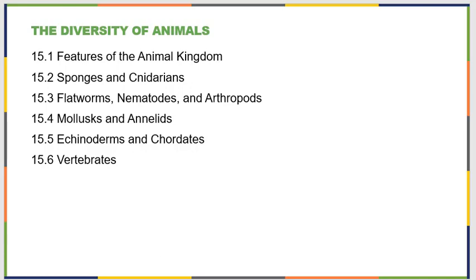To start with, we'll look at the features of animals in general and then split them up into groups. We'll talk about sponges and cnidarians, flatworms, nematodes, arthropods, mollusks, annelids, echinoderms, chordates, and then focus on the chordates that are vertebrates. So it's a very, very long chapter.